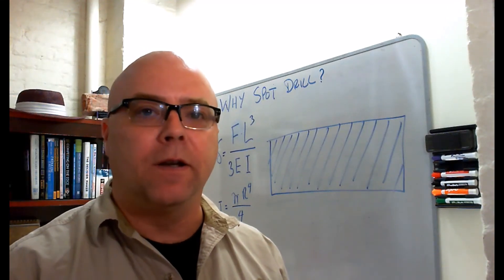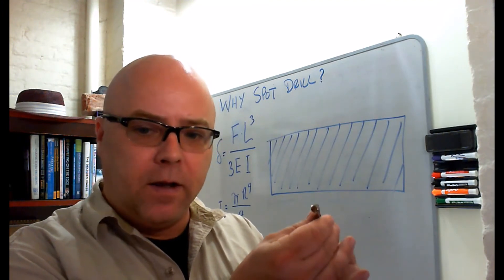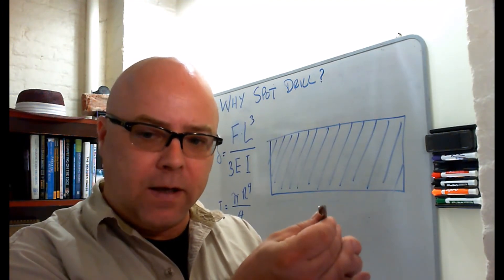So why is it that we want to use a spot drilling operation? Let's consider the tip of a spinning drill. As you see, the drill is rotating here.